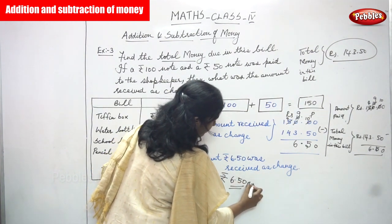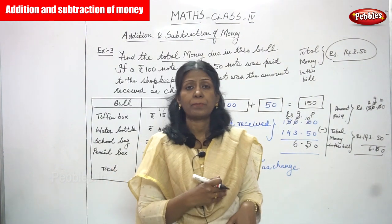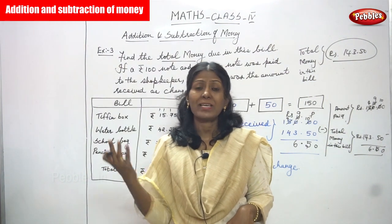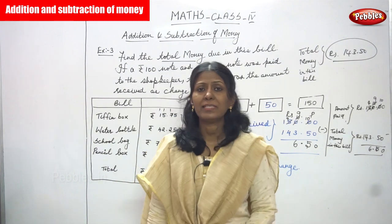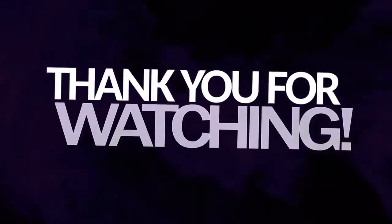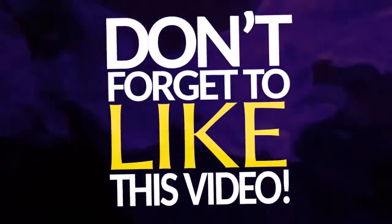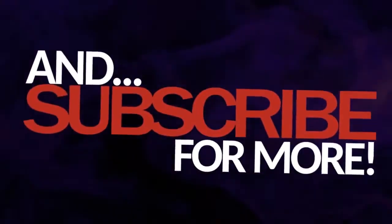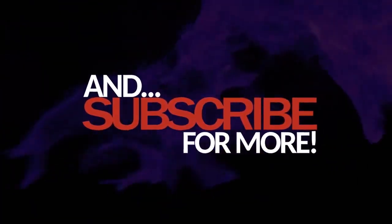Otherwise we can say 6 rupees 50 paise. This is the answer — this amount was received from the shopkeeper by the particular person, X or Y. He received 6 rupees 50 paise as change.